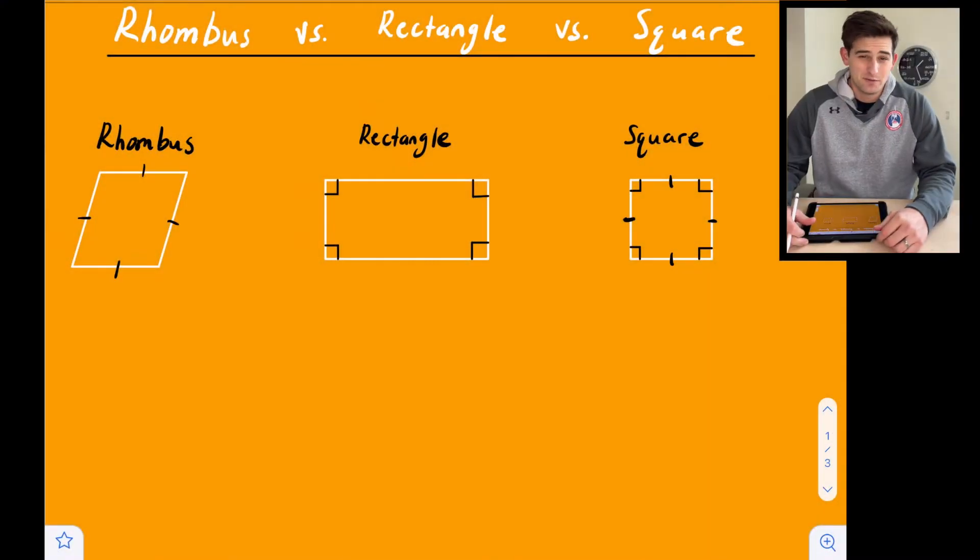Everybody, in this video we're going to talk about the difference between a rhombus, a rectangle, and a square. We see these three shapes drawn right here and some characteristics about them. So let's write down what this diagram is showing us.